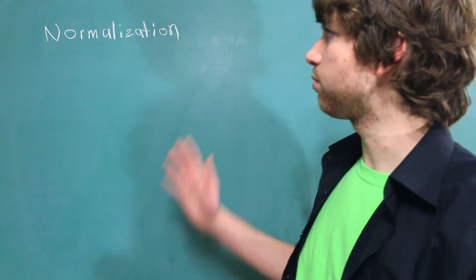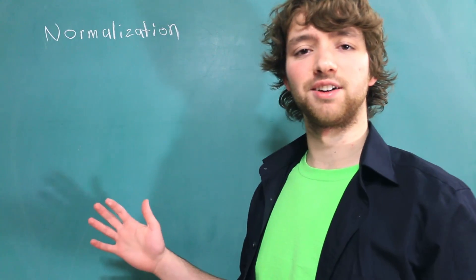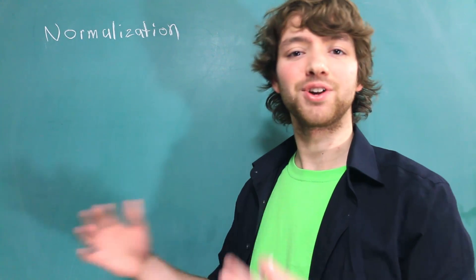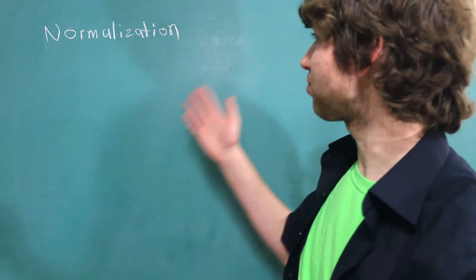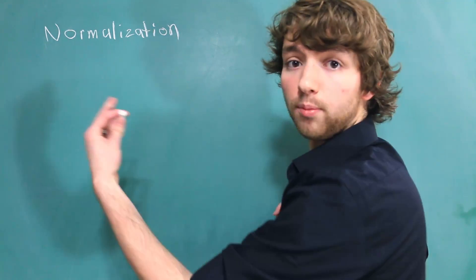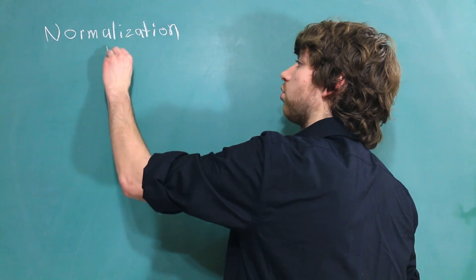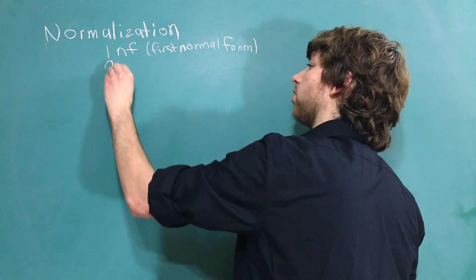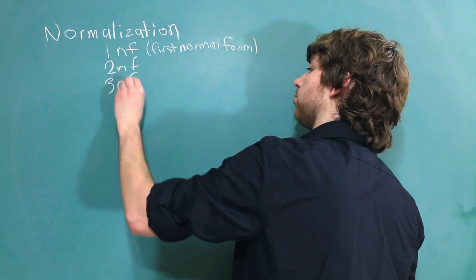Normalization. Now, everyone makes normalization way too complicated, so I'm going to try and explain it in English. But essentially, normalization has three main steps, and they're called normal forms. We have first normal form, second normal form, and of course, third normal form.